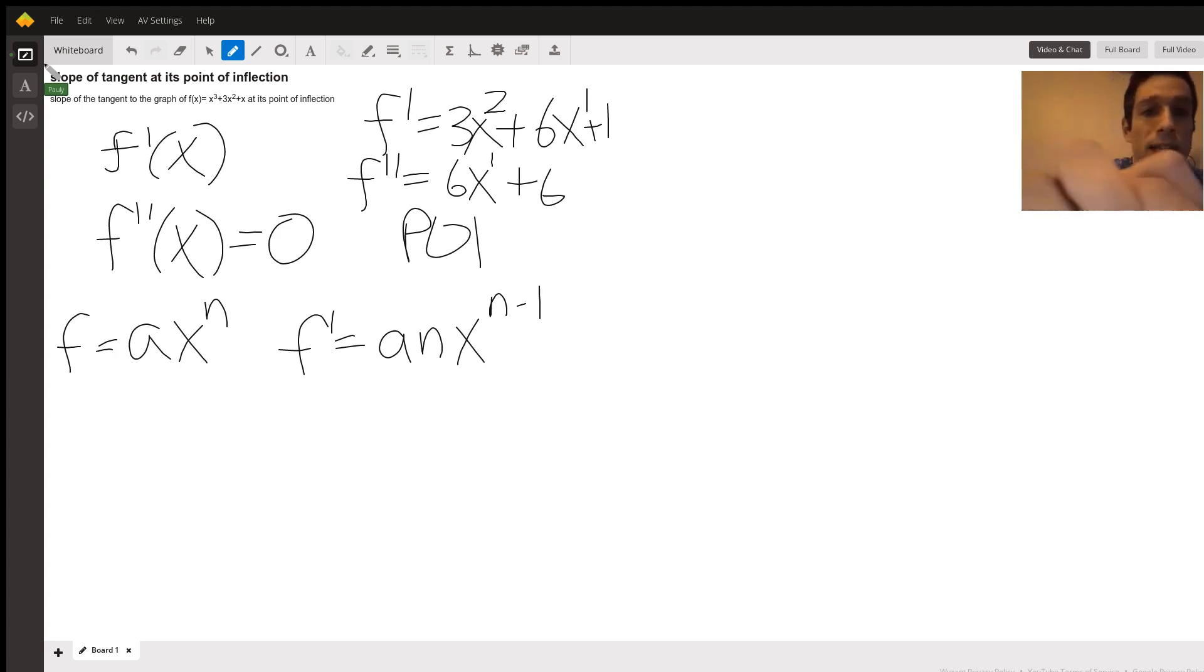At this point we can set the second derivative equal to zero, and that'll find us the point of inflection. So six x plus six equals zero. All right, looks like I ran out of room.